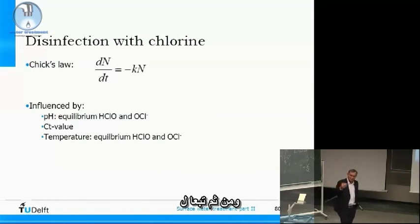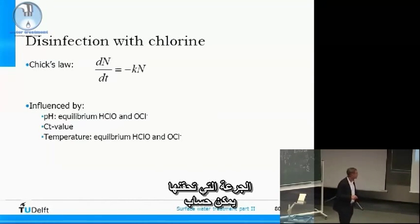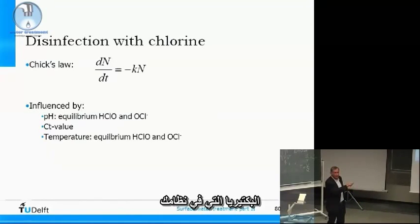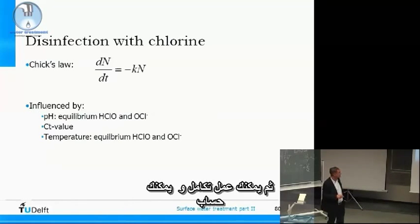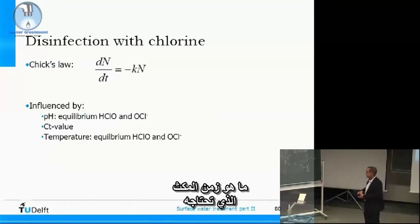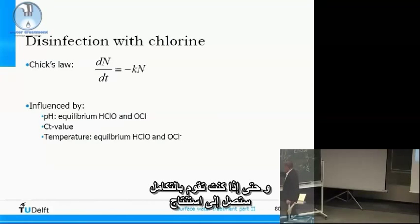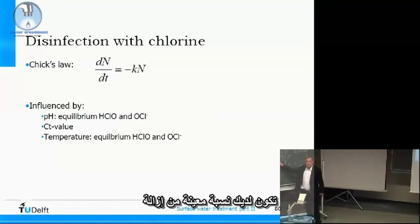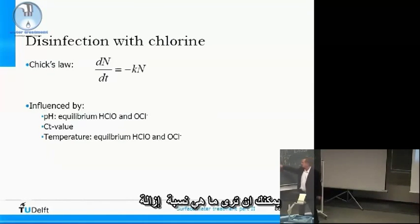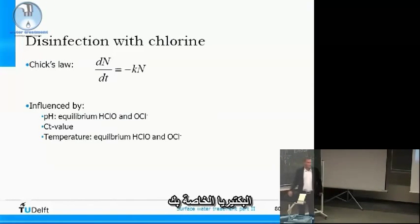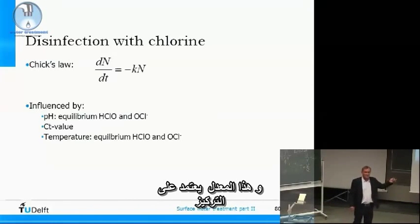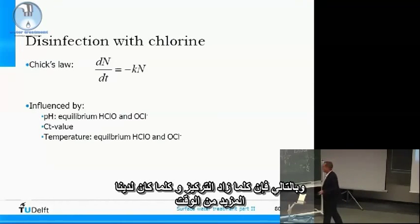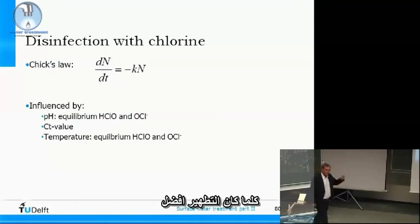Depending on the dose you give, you can calculate the removal of bacteria in your system. You can integrate over time to calculate the residence time needed. When it is plug flow, you get a system where a certain rate of removal and a certain residence time tell you the removal of bacteria. This rate depends on concentration: the more concentration you have and the more time you have, the better the disinfection.